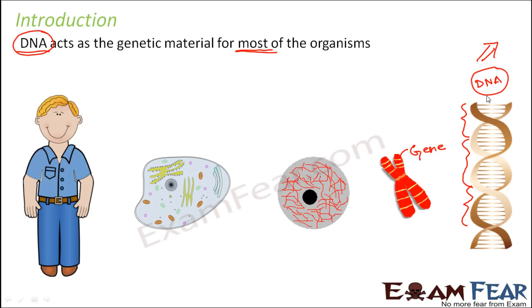We will cover why DNA is the genetic material and what is the role of RNA. If DNA is the genetic material in most organisms, you might think we don't need RNA — but that is not the case. RNA plays a very crucial role. We have to look at the role of RNA, and then see how protein synthesis is dependent on DNA. To understand all this, we should be very clear about the structure and function of both RNA and DNA.